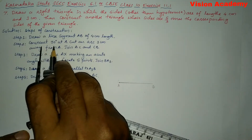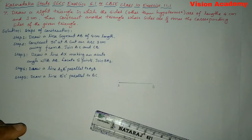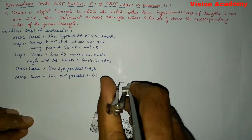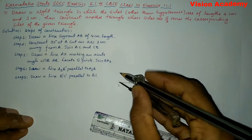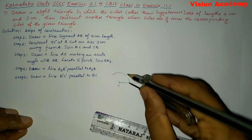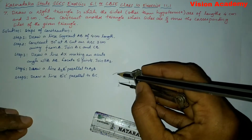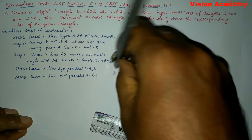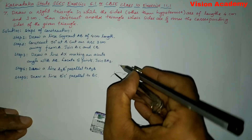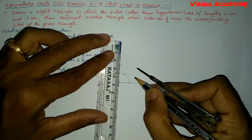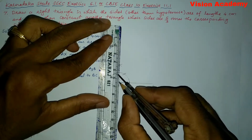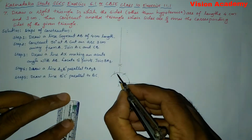Now step 2: construct 90 degrees at A. In order to draw a 90 degree angle, let me draw the arc. Keeping on this point, cut here. Keeping on this point, you can cut here and here. Next, keeping on this point, cut here. This intersected area through which we will be able to draw a line which makes 90 degrees. Let us draw a straight line — this forms 90 degrees.